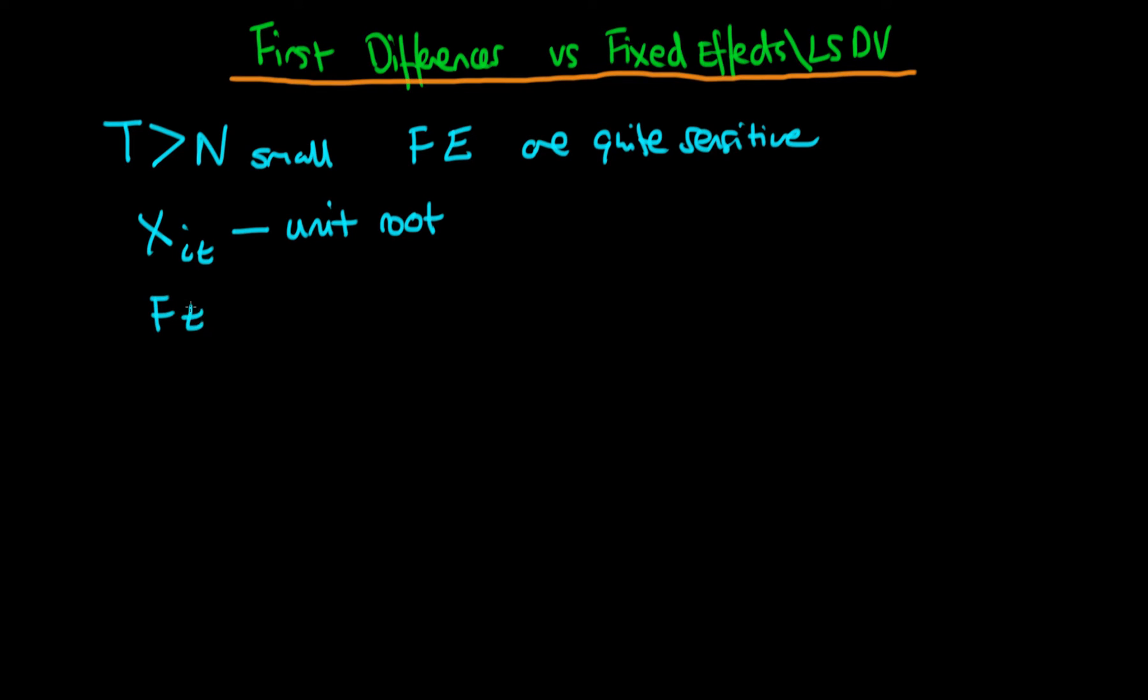So fixed effects could potentially run into the issue very likely of having a spurious regression. And in those circumstances where we are dealing with processes which could be unit roots, we are much better off using first differences.